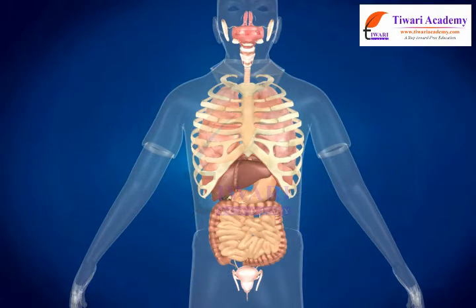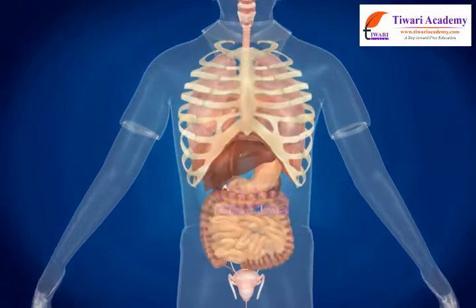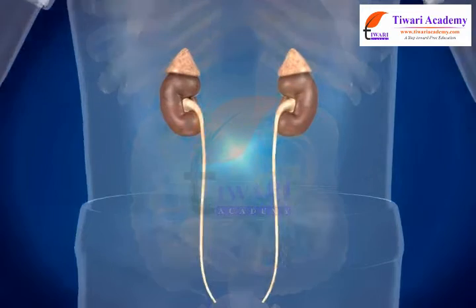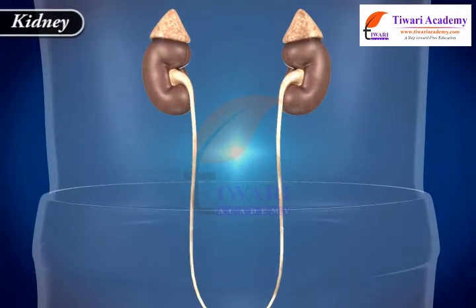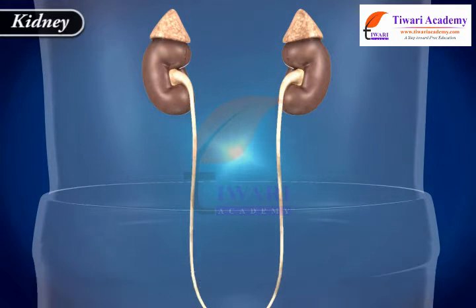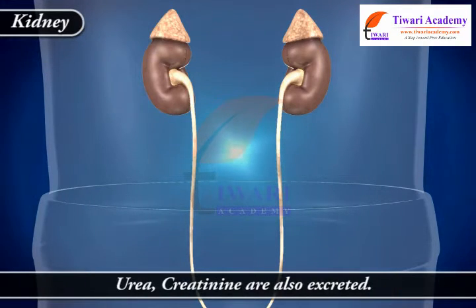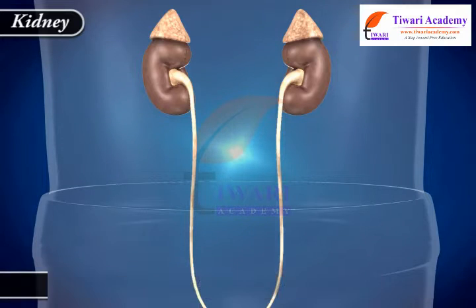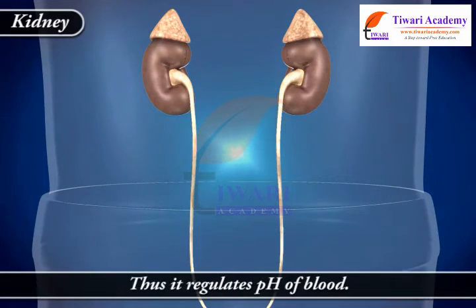Different organs have different functions. The kidney excretes excess water and salts from the body. Urea and creatinine are also excreted. Thus it regulates the pH of blood.